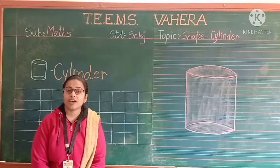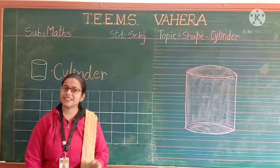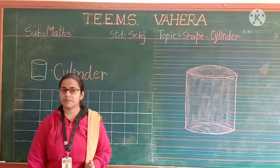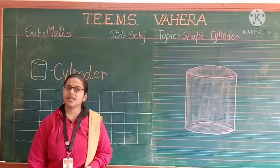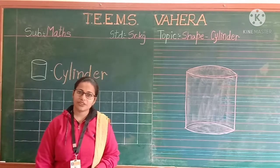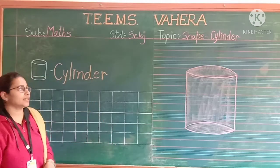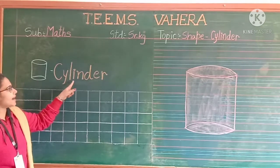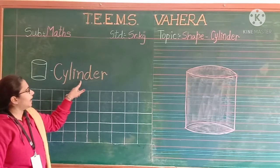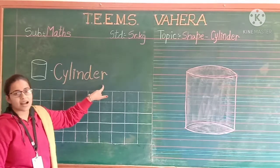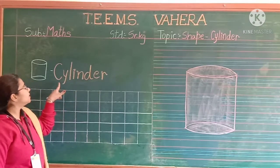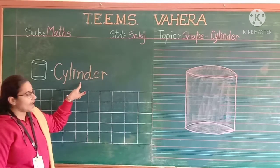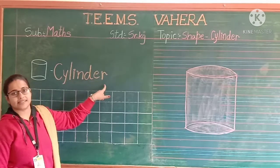Now we have seen many things with cylinder shape. Right now we are going to write the spelling of cylinder in the notebook. So what is the spelling of cylinder? C-Y-L-I-N-D-E-R. Cylinder.